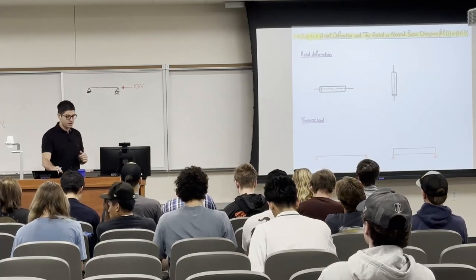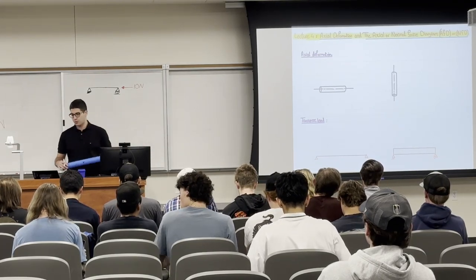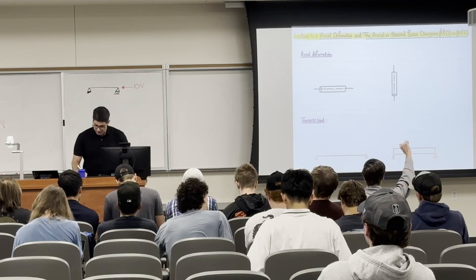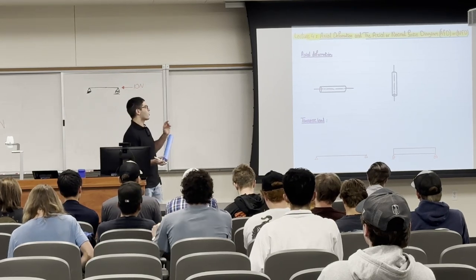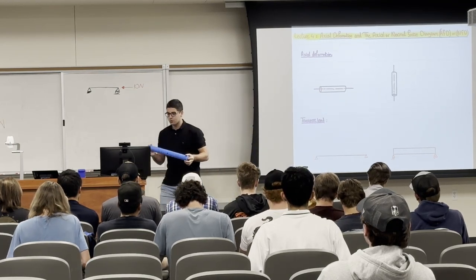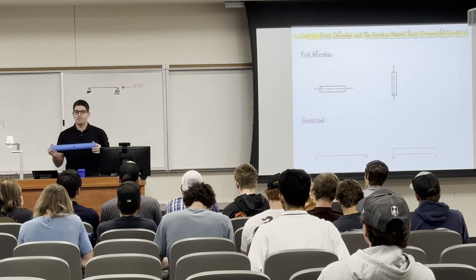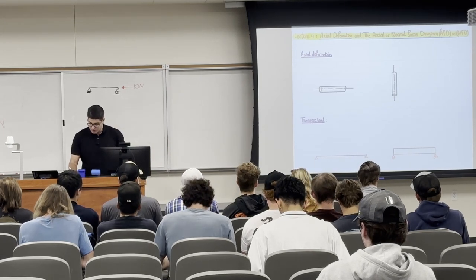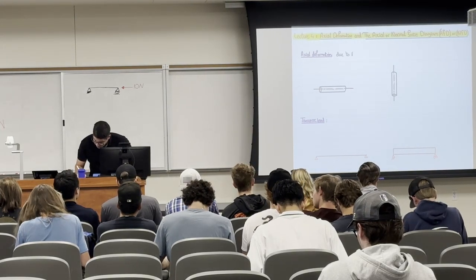Today's class is about axial deformation and we'll learn how to draw the axial force diagram or normal force diagram. Axial deformation is the deformation that happens along the longitudinal axis of a member. When we apply a load along that longitudinal axis, we call it a longitudinal load, and we will have a longitudinal or axial displacement. In short, axial deformation happens due to axial loads.